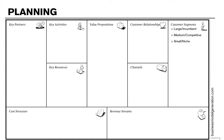Customer segments: we have large incumbent operators. These are companies like Verizon or Comcast that own physical plant, cable plant, or phone plant in a particular geography. Next, we've got medium competitive operators. These are companies like Level 3, Time Warner Telecom, or XO that have a particular competitive focus.